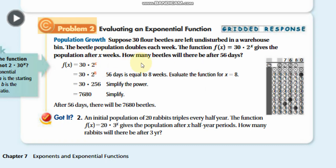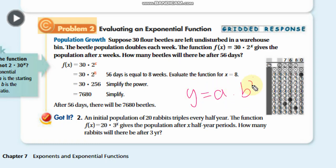Here we are finding the value for a single x, whereas on the previous page we found values over a range. Next problem: an initial population of 20 rabbits. Keep in mind that the initial value always equals a. So here a equals 20, matching the generic form y equals a times b to the power x.